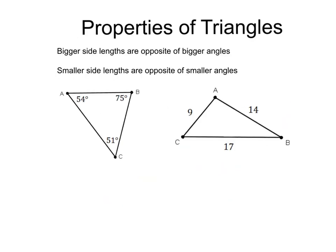The last thing we are going to cover is the relationship between sides and opposite angles. An opposite side and angle are just those that are directly across from one another. So AB would have an opposite angle of 51 degrees, as you can see it's directly across. The rule of thumb is: the bigger the side length, the bigger the opposite angle; the smaller the side length, the smaller the opposite angle. For example, if we have this triangle with 51, 54, and 75 degrees, and we wanted to find the biggest side length, we can use the biggest angle — 75 — to go opposite and find our biggest side length. That would be AC.